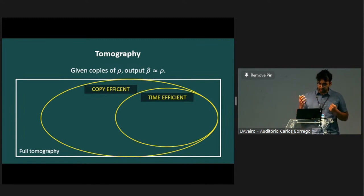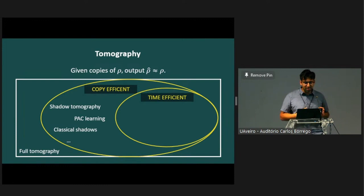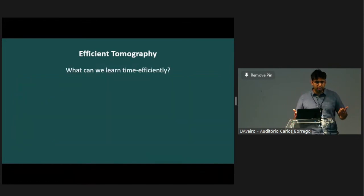On Monday, Richard set this up nicely. There's like two high-level things you can do. One thing you can do is try to learn less about your state, and this line of thinking has led to some wonderful algorithms over the last few years, like PAC learning of quantum states, shadow tomography, and classical shadows, which we heard about on Monday. But except for some restricted settings, these algorithms remain computationally inefficient.